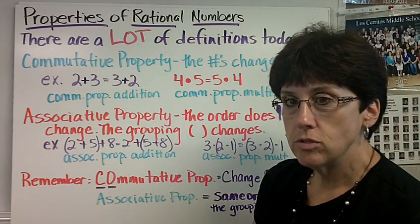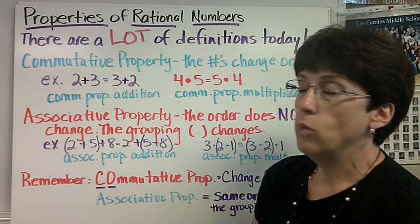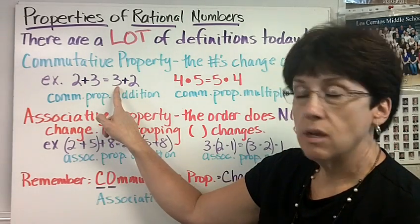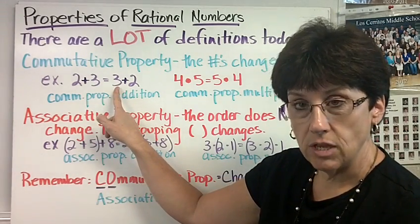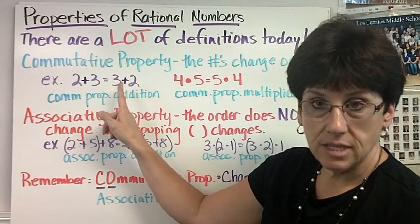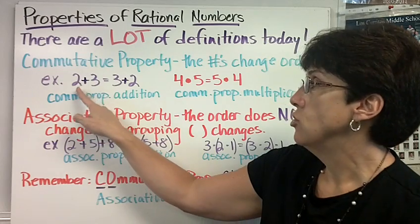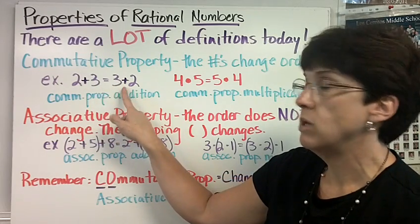Commutative property - the numbers change order. When you look at the numbers on one side of the equal sign compared to the numbers on the other side of the equal sign, it's the same numbers, but the order is not the same.